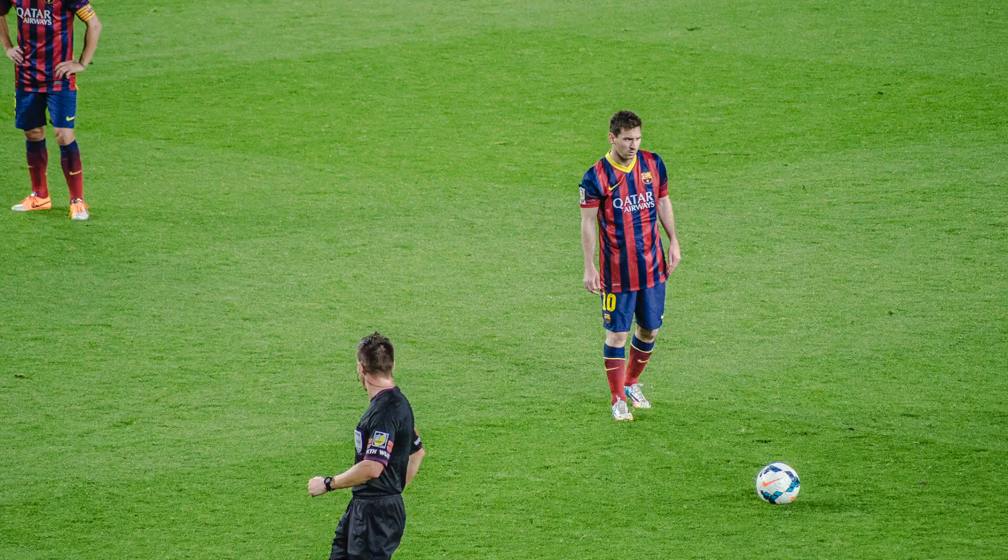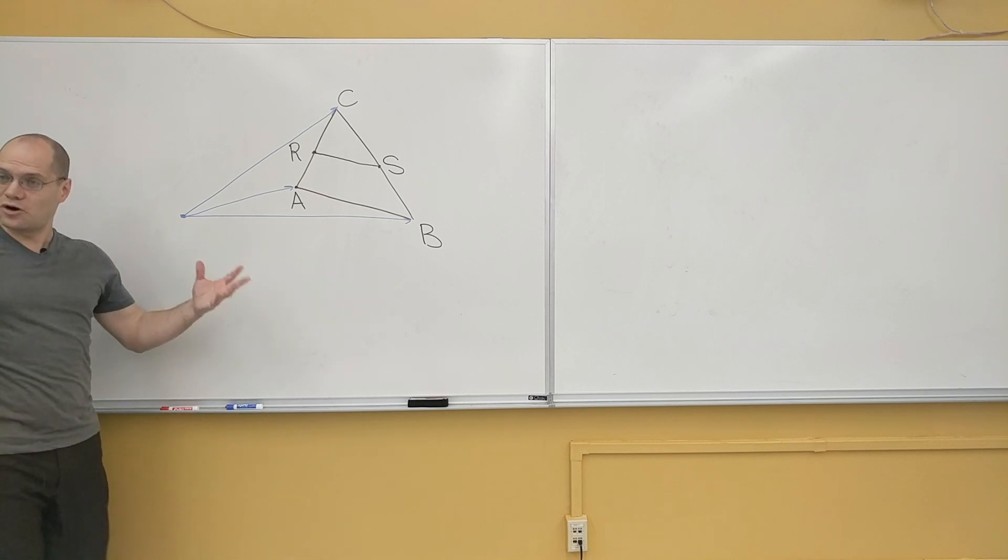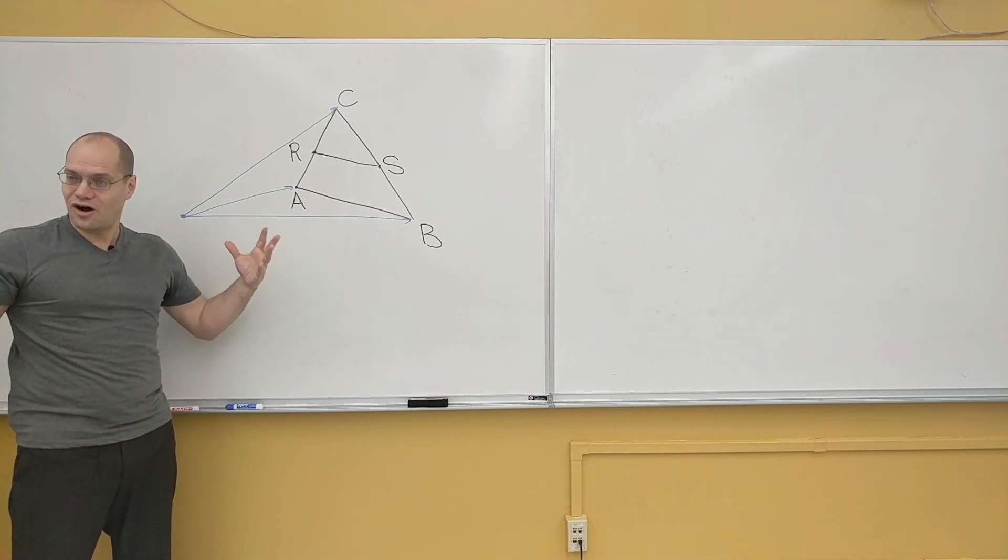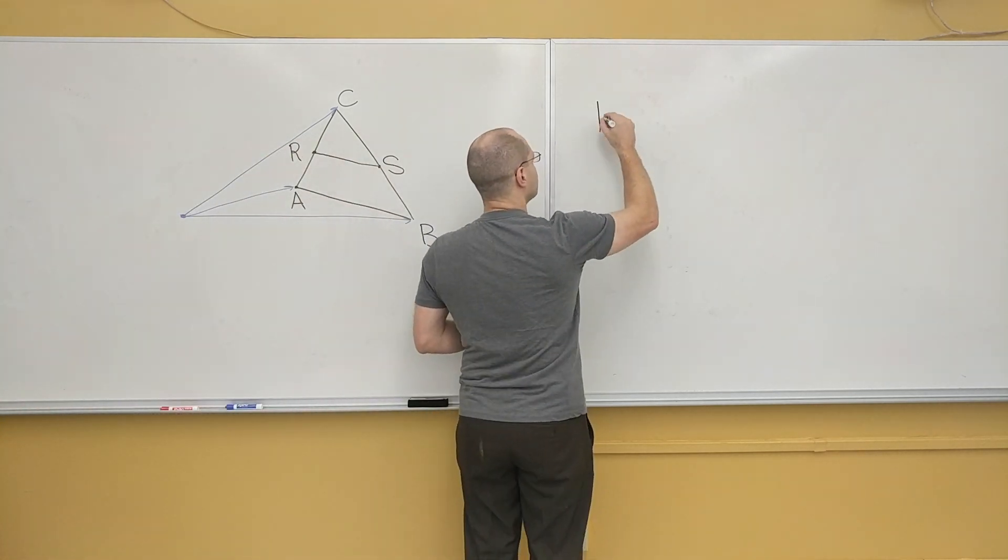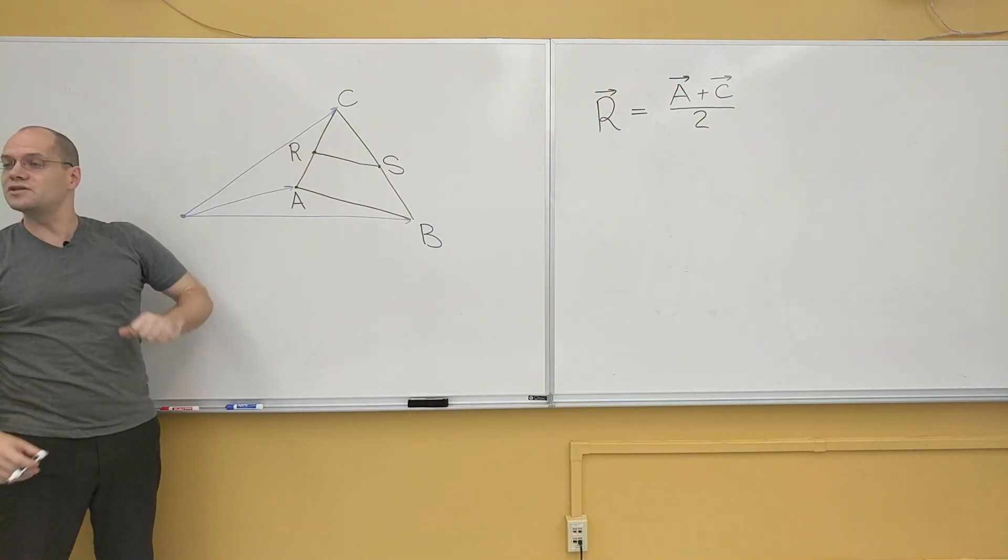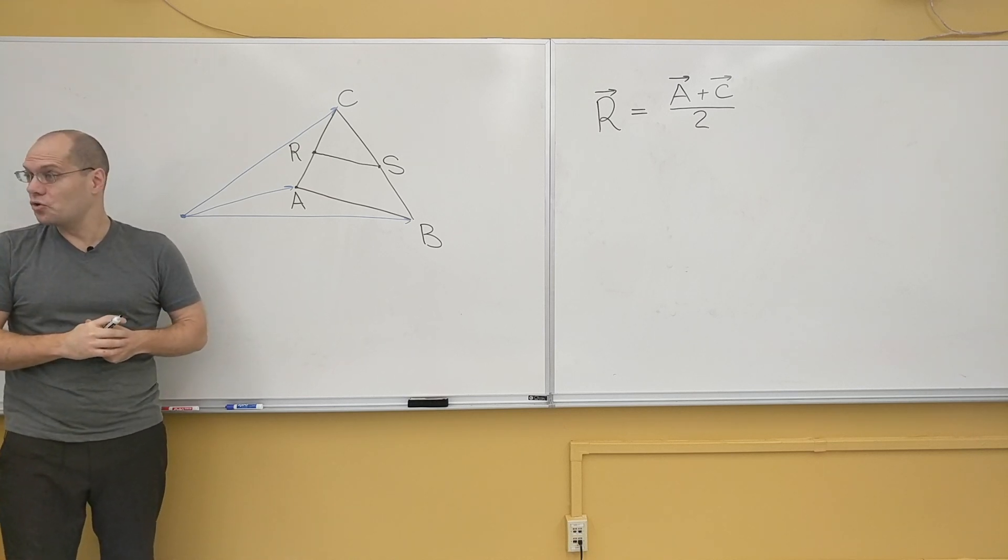I just don't want to make the drawing messy. So let's express R in terms of A and C. And of course, R equals, just say it out loud, A plus C over 2. Let's do the same thing for the vector S. S equals B plus C over 2.